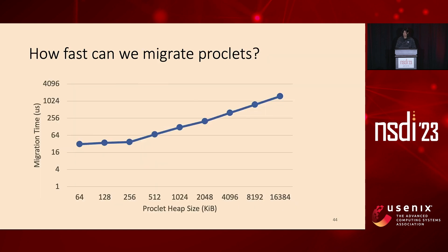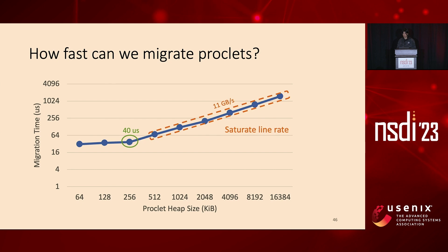To find out how fast we can migrate proclets, we constructed a microbenchmark to measure proclet migration time with different proclet heap sizes. The y-axis is migration time in microseconds and the x-axis is proclet heap size in kilobytes, both on a log scale. When the heap size is smaller than 256 kilobytes, it takes as little as 40 microseconds to migrate a proclet. When the heap size is large, we can migrate proclets at 11 gigabytes per second, which basically saturates the line rate of the 100G Ethernet in our setup.